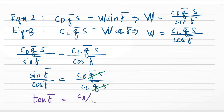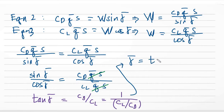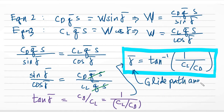So tangent gamma-bar equals C-sub-D over C-sub-L. For convenience, we express this using the lift-to-drag ratio C-sub-L over C-sub-D, which is a very important concept applied later in subsonic aerodynamics. Finally, we have the formula for the glide path angle: gamma-bar equals arctangent of 1 over (C-sub-L over C-sub-D). This is our glide path angle formula.